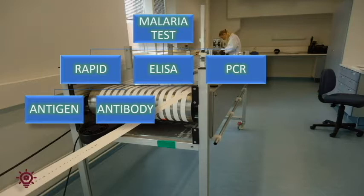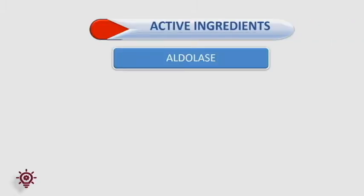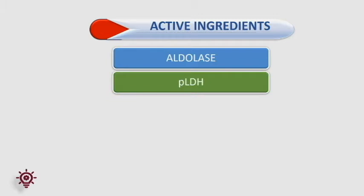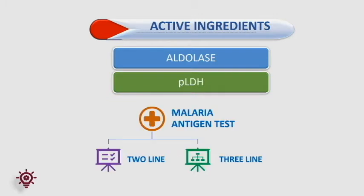So now I will focus on the antigen test. A whole blood sample is used for the antigen test. Two kinds of active ingredients used in malaria antigen tests are aldolase and PLDH, plasmodium lactate dehydrogenase. There are two types of malaria antigen tests. The first consists of two lines — control and test — called the mixed malaria test. The second is a three-line test, where we can identify either PF or PV separately.